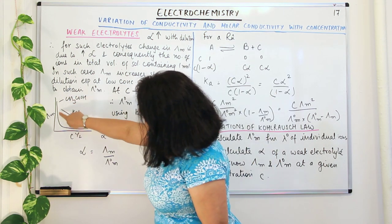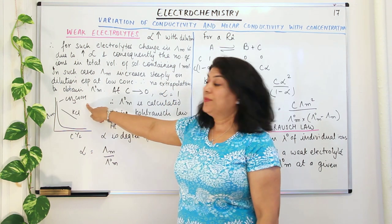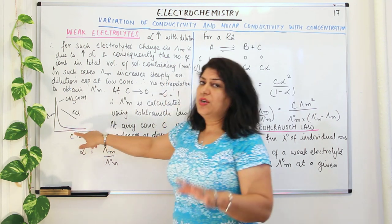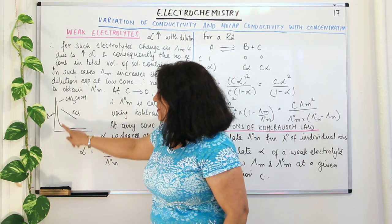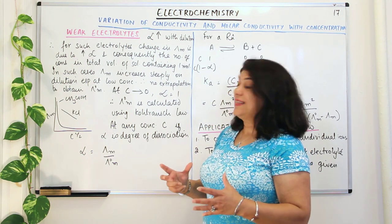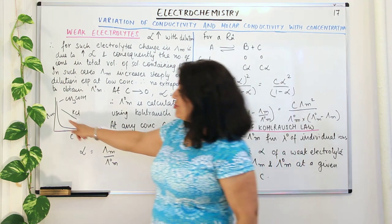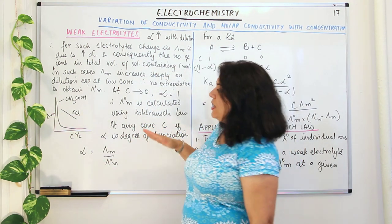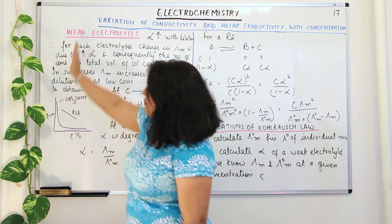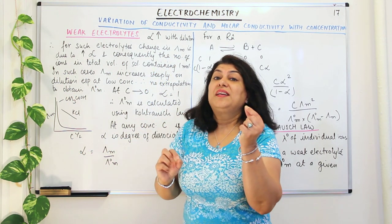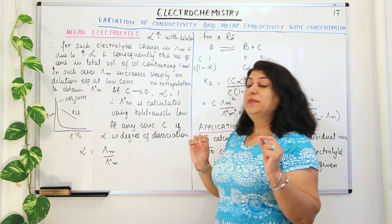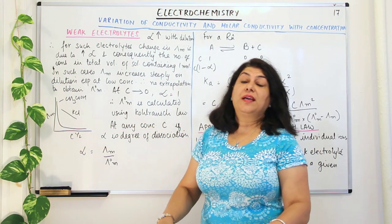Since there is a steep rise in molar conductivity with very little decrease in concentration for a weak electrolyte, you cannot extrapolate it like you did for a strong electrolyte. Therefore, it is not possible to reach the limiting molar conductivity by extrapolation in the case of weak electrolytes. So if you cannot obtain it from the graph, you need another way to find the limiting molar conductivity.